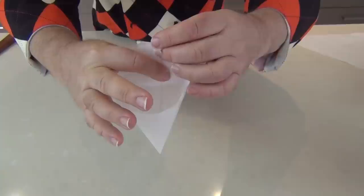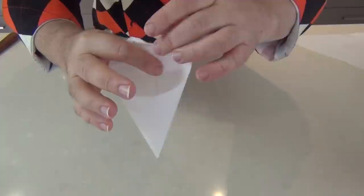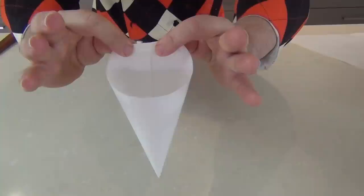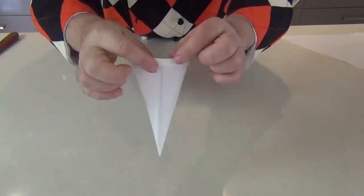Okay now if we let go of that, that would just unroll. So we just take those top corners, the little ears that are sticking up and fold that over two or three times just to secure the icing bag from unrolling. So there you go, another fold, that's three folds.